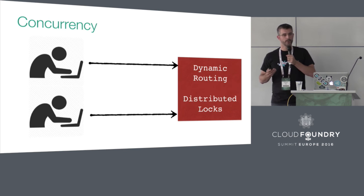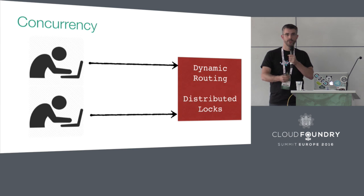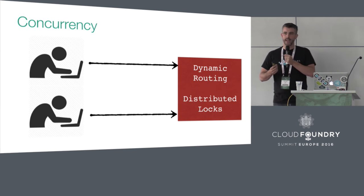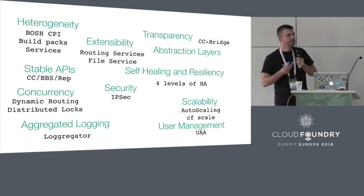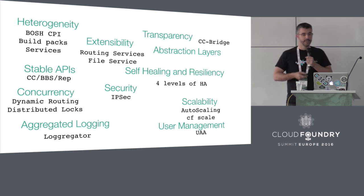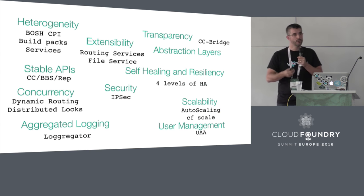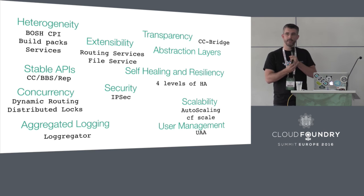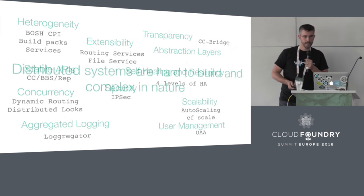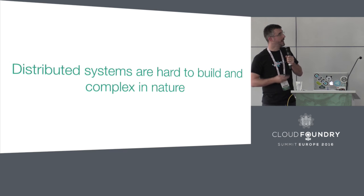Distributed systems also need to support concurrency. When you have many different users — whether users of your application or different developers — all competing to view and update the same piece of data, the system needs to handle that in a robust way. Things like dynamic routing and distributed locks really help with dealing with concurrency challenges. The list of complexity just keeps on growing: security, self-healing, monitoring, logging, user management — many components go into making a distributed system stable and reliable. In essence, they're hard to build and complex in nature.